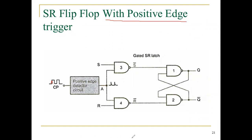Two NAND gates are used for receiving inputs, and another two NAND gates are used for the outputs. The output-side NAND gates are connected in cross-connections — anti-parallel connection — meaning the output of the first NAND gate is connected to one input of the second NAND gate, and the second gate's output is connected to one input of the first gate. So Q is connected to the input of the second, and Q-bar to the input of the first NAND gate.